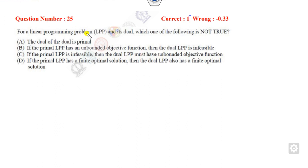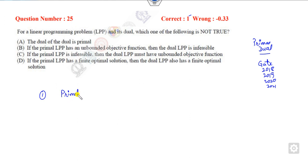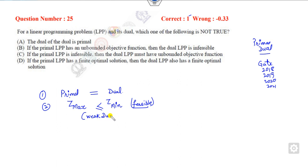Now look at the second question, which is related to the primal-dual relationship. I already discussed this in my previous videos on GATE 2018, 2019, 2020, and 2021 LPP questions. The key relationship: the optimal value of the primal and the optimal value of the dual are always the same. If the problem is maximization and the other is minimization, then the optimal answer of the minimization is always greater than that of the primal at any feasible point. This is called the weak duality theorem.